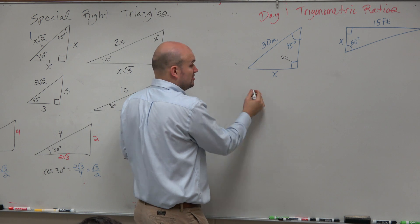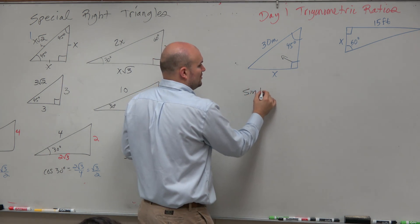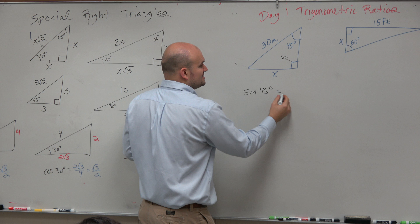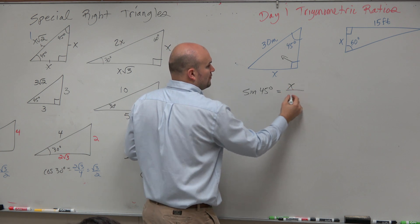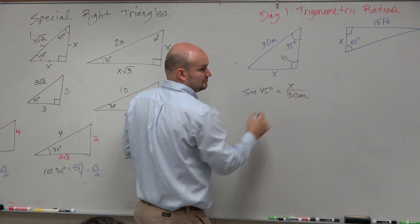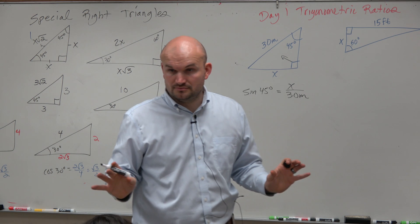So I can write a trigonometric equation and say the sine of 45 degrees is equal to opposite over hypotenuse. Wouldn't you agree?